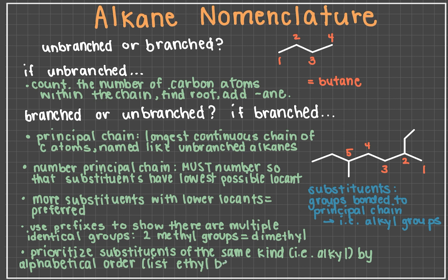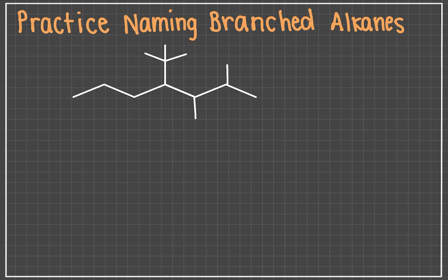Alphabetical order is vital. However, you should ignore the prefix in front of the substituent name. For instance, if you have a tert-butyl group, use "butyl" to alphabetize. Substituents should be listed in alphabetical order. Bringing all of that together, you can now name a branched alkane.